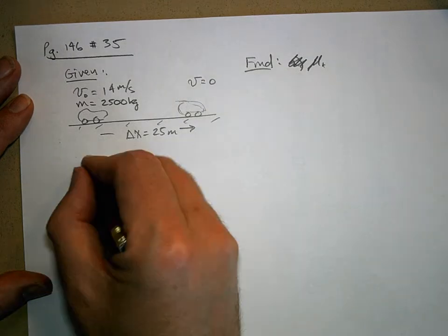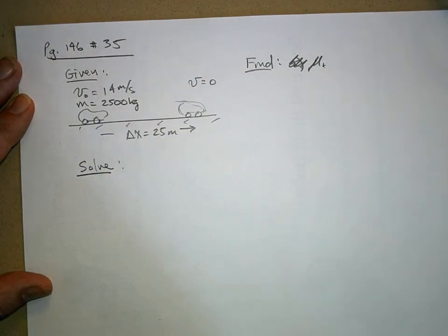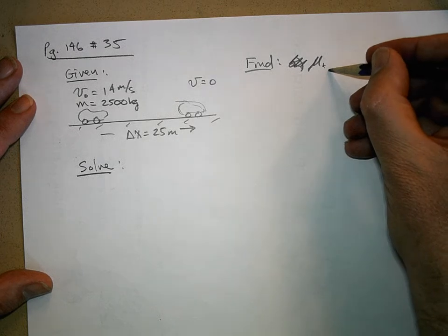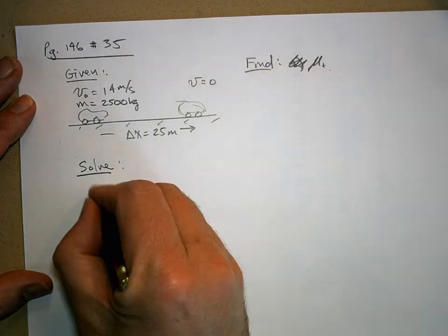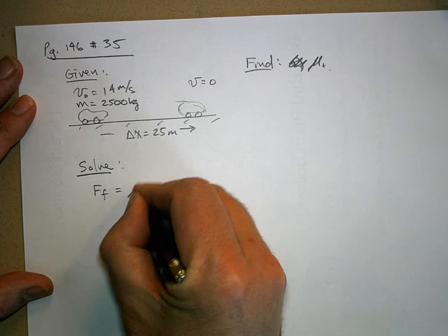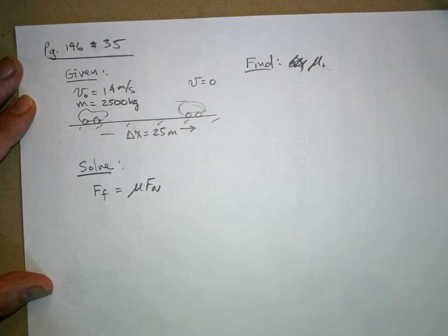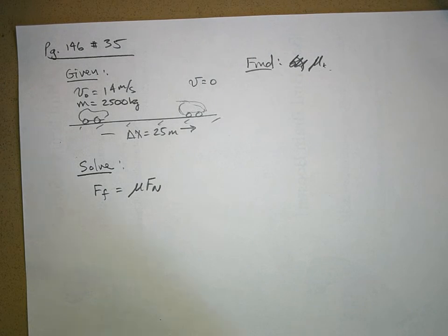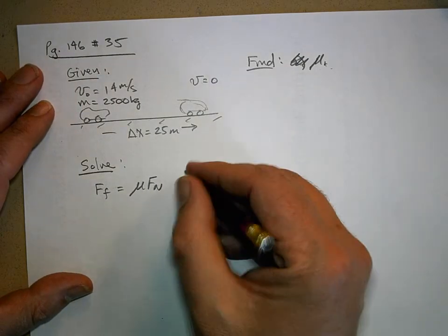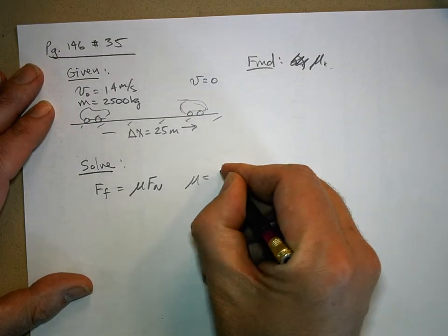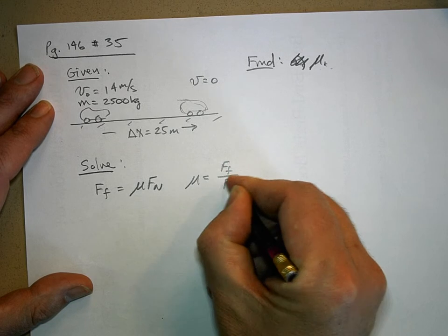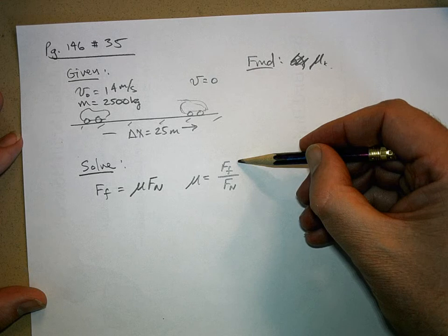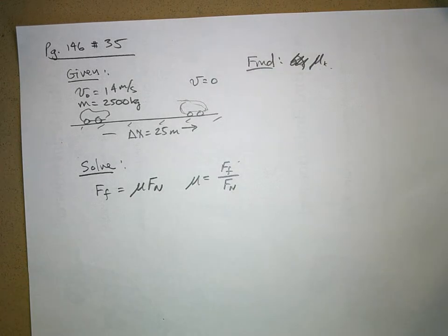So let's solve it. I always start with what I'm trying to find: mu. There's only one equation with mu in it, and that is the force of friction is equal to mu times the normal force. So let's go ahead and solve for mu. Mu equals the force of friction divided by the normal force. This tells me what to do. I need to figure out what the friction force is and what the normal force is.